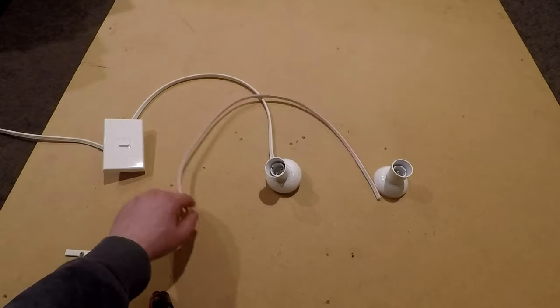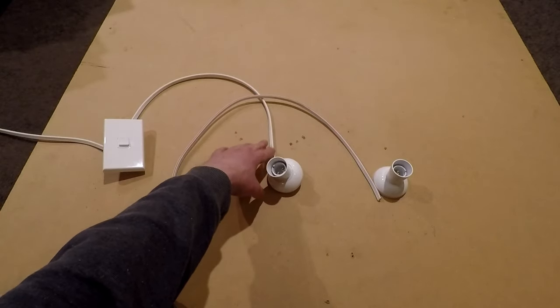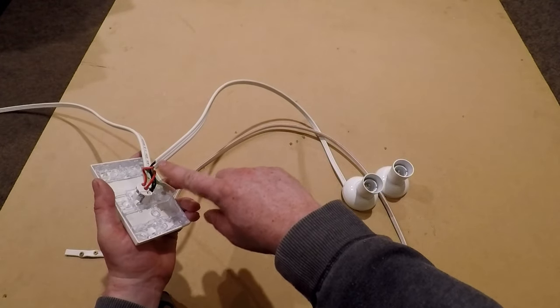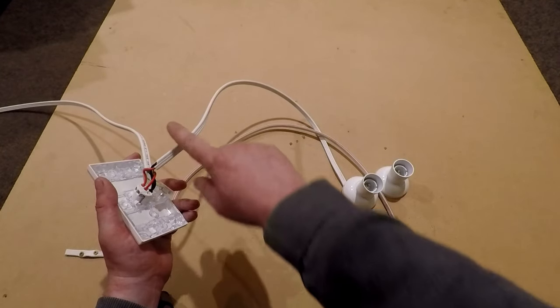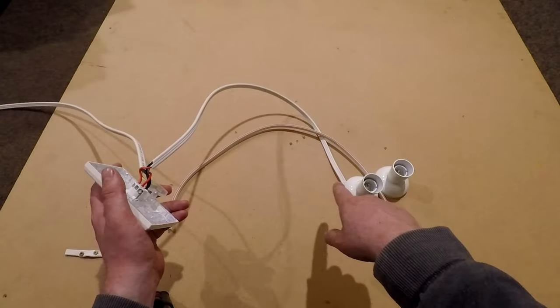What I mean by that is the red, black, and green cores will go into the exact same locations as the existing cable going to the batten holder.